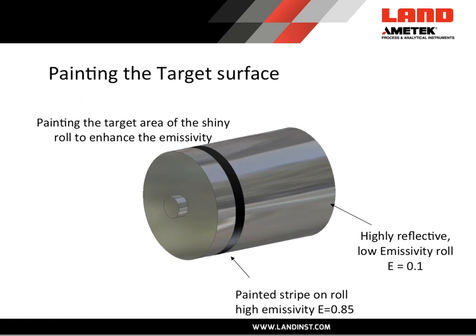Sometimes if you have a problematic, very low emissivity material, it's possible to raise the emissivity by doing something to it. In this example we see a chrome plated roll typical to what would be used in a paper mill. The surface of that chrome plated roll is very reflective with a very low emissivity value of 0.1. However, if you pick a part of that roll towards the edge and not in contact with the paper, you may be allowed to paint a stripe on that roll and measure the temperature of that stripe, because that paint would have a much higher emissivity of 0.85 and be very easy to measure.